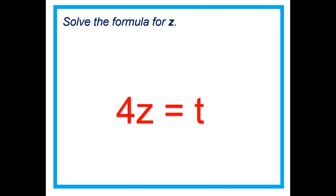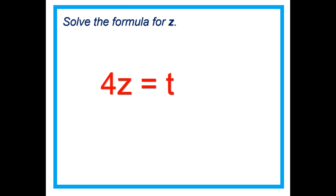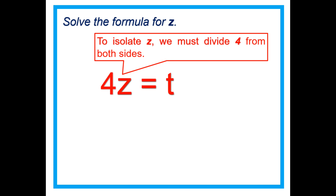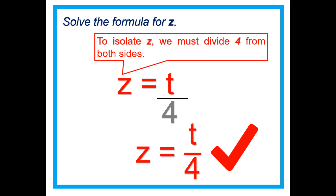The formula is 4Z equals T. Our objective is to isolate the variable Z. To isolate Z, we must divide 4 from both sides: 4Z divided by 4, and T divided by 4. That cancels 4, giving us Z equals T divided by 4. That's it.